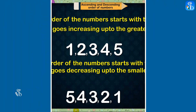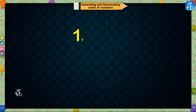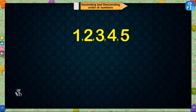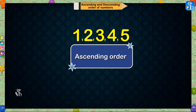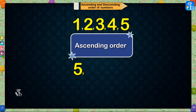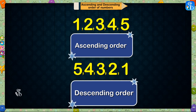For example, 1, 2, 3, 4, 5 is an ascending order of the numbers. Whereas 5, 4, 3, 2, 1 is a descending order of the numbers.